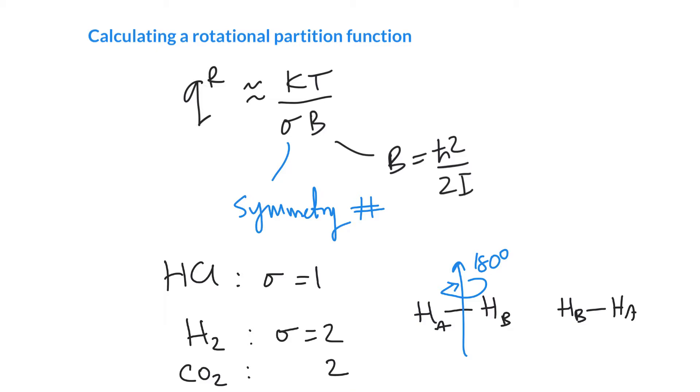So you can't distinguish between these two orientations. To avoid double counting we divide by that symmetry number. The same with carbon dioxide - if we label the left and right oxygen A versus B.